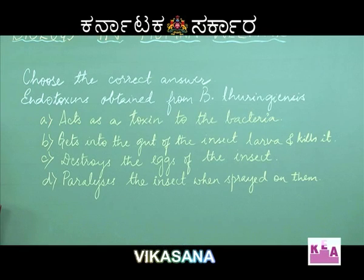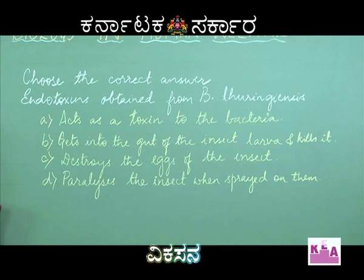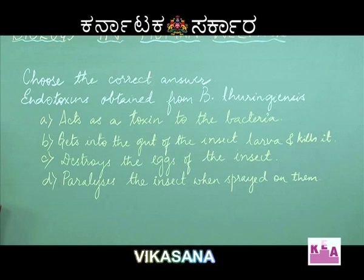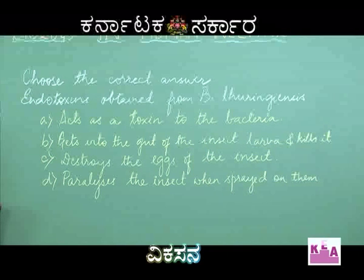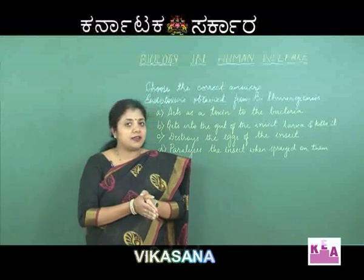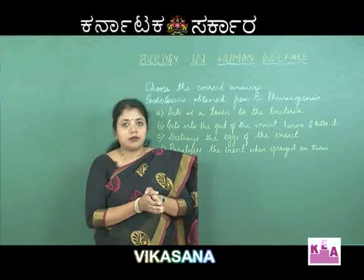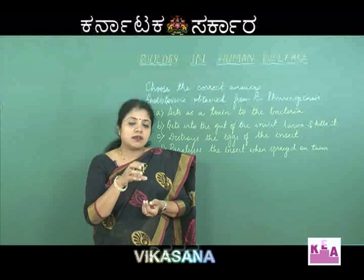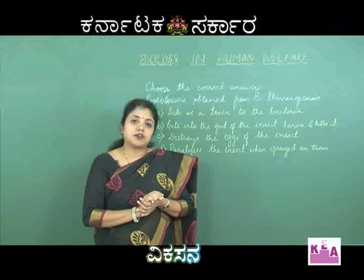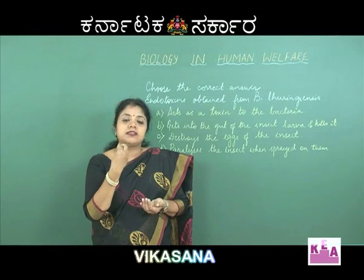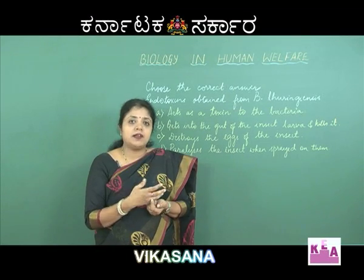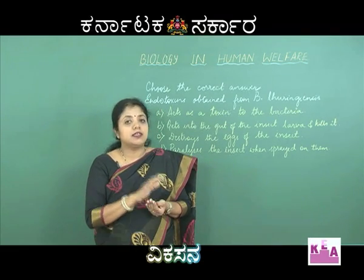The next question: The endotoxins obtained from Bacillus thuringiensis — option A, acts as a toxin to the bacteria; option B, gets into the gut of the insect larvae and kills it; option C, destroys the eggs of the insect; option D, paralyzes the insect when sprayed on them. Bacillus thuringiensis is classically studied under biocontrol. It is a soil bacteria that produces an endotoxin. When the toxin gets inside the gut of the insect, it gets activated and damages the walls of the gut, thus killing the insect.